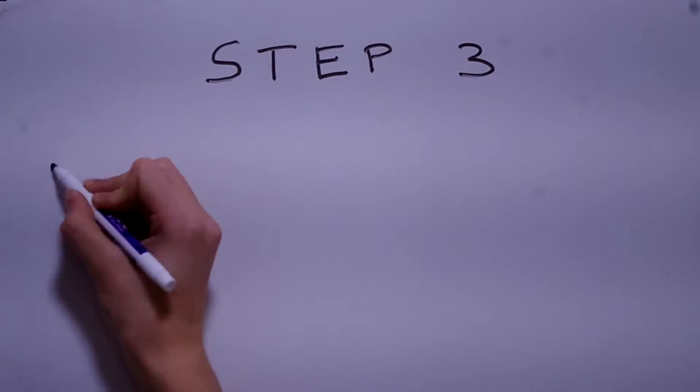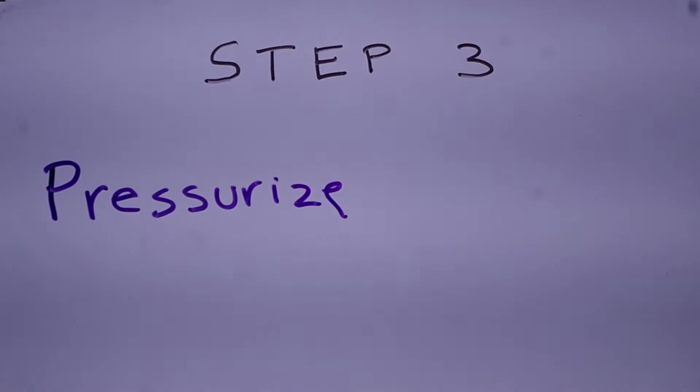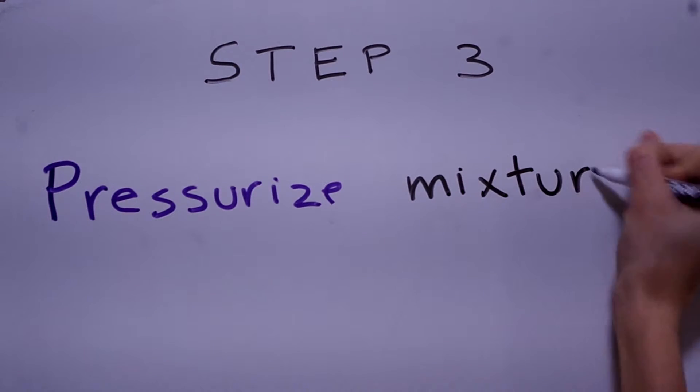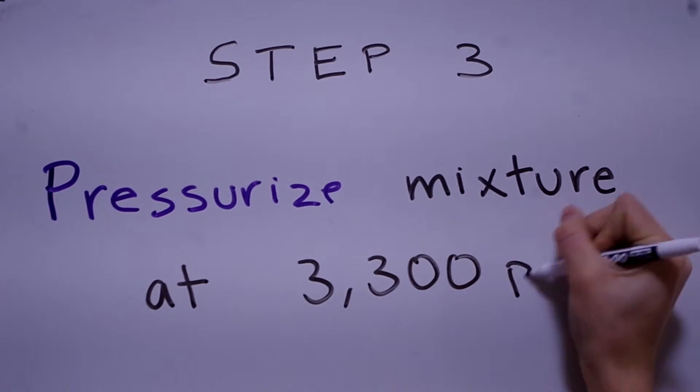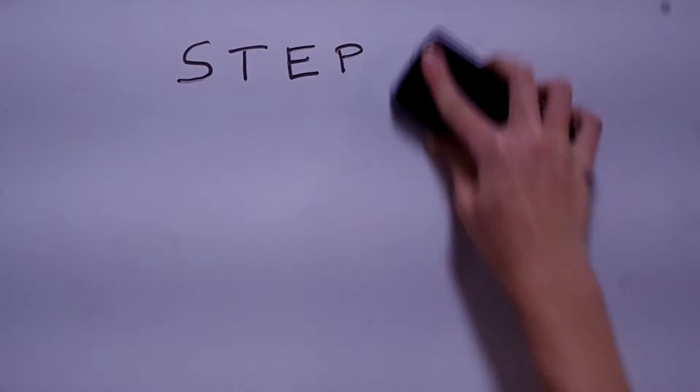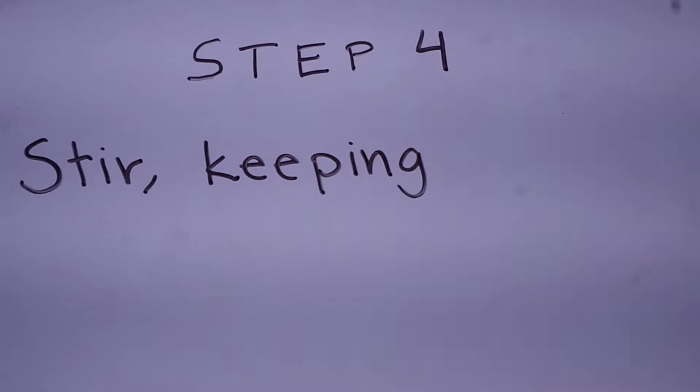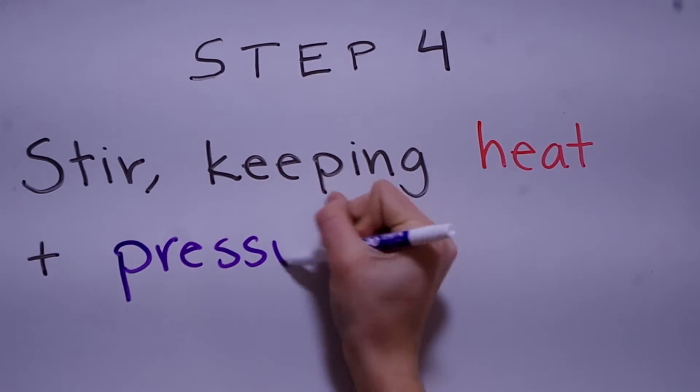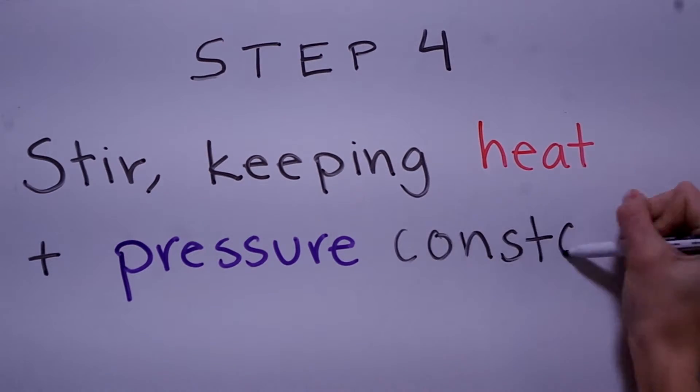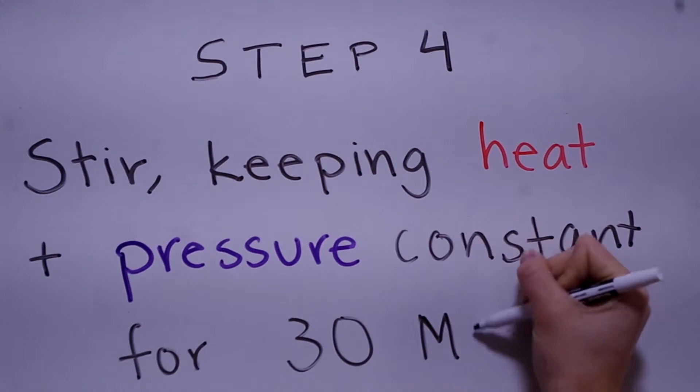Step three, now you pressurize the heated mixture at 3,300 psi. Step four, next you're going to stir the components to better mix them together while keeping both the heat and the pressure constant for 30 minutes.